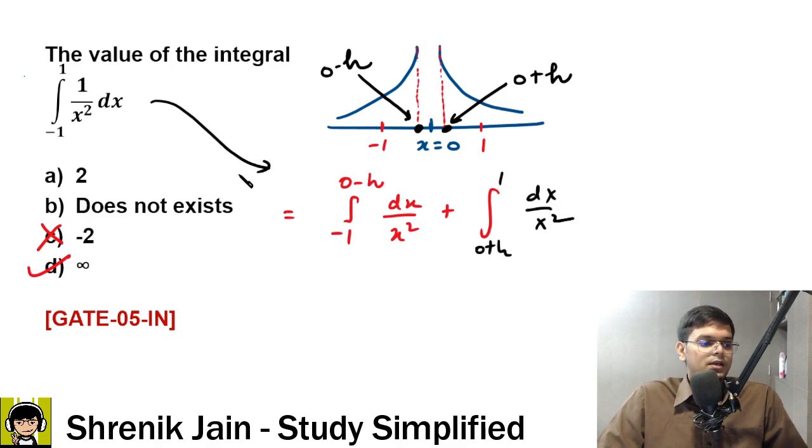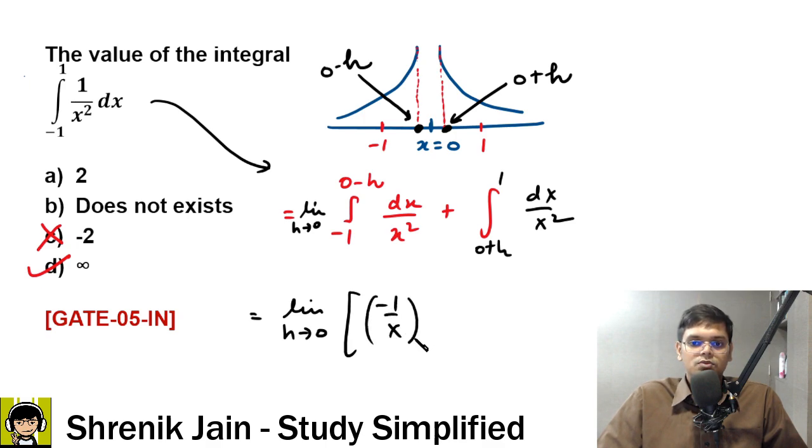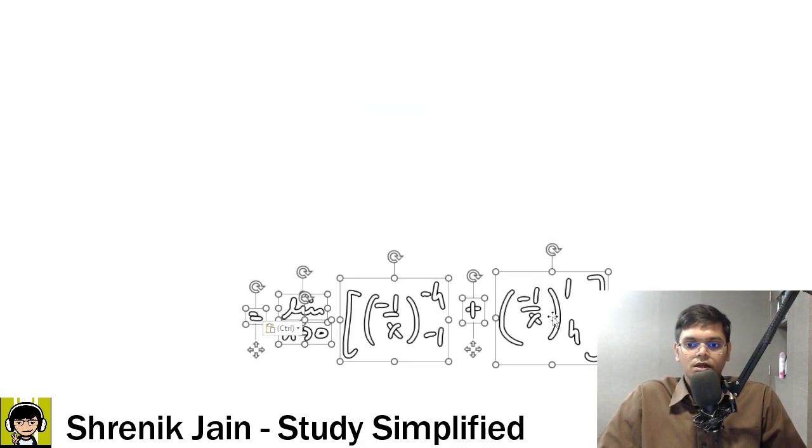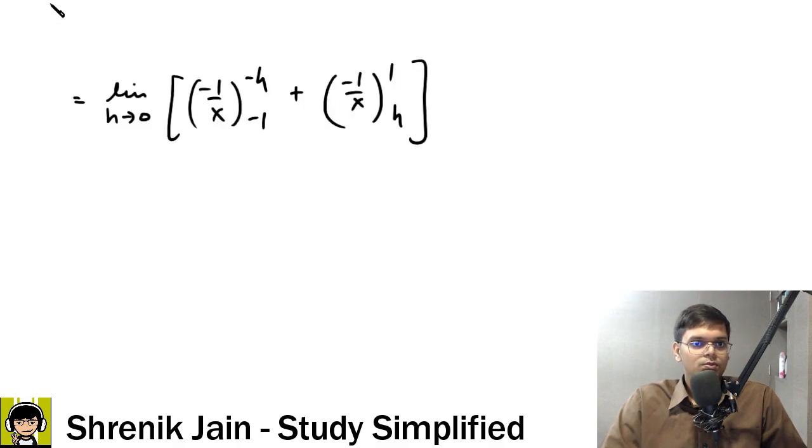Where limit h tends to 0. Now, limit h tends to 0, integral 1 over x squared is -1 by x. Minus 1 by x, okay, minus 1 by x, upper limit minus h, lower limit -1, plus integral of this thing is again -1 by x, upper limit h. So now please do upper limit minus lower limit and tell me what's the answer.